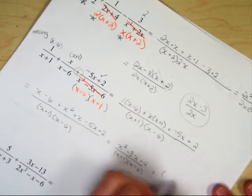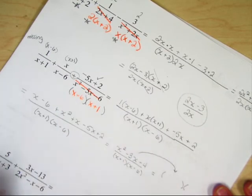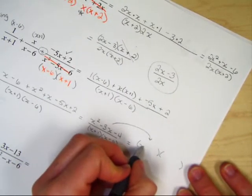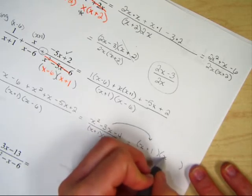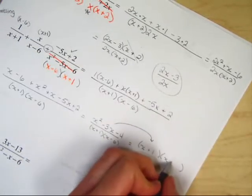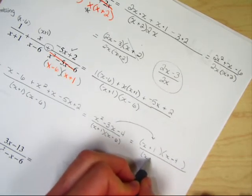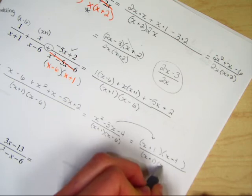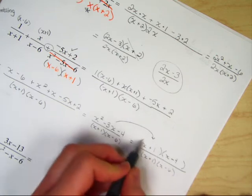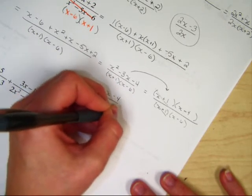Factor the top. That should become x plus 1, x minus 4. You've got to know how to factor here. The bottom is x plus 1, x minus 6. You should notice how top and bottom cancel. And you're left with x minus 4 over x minus 6.